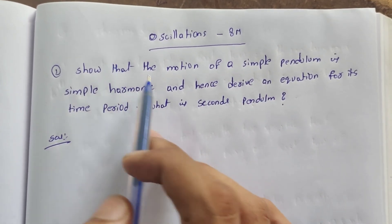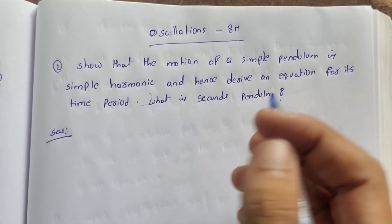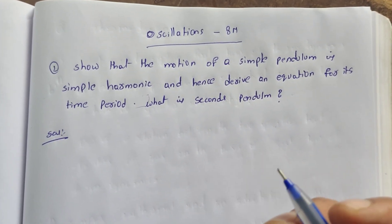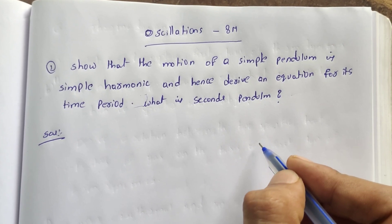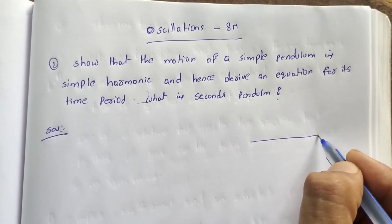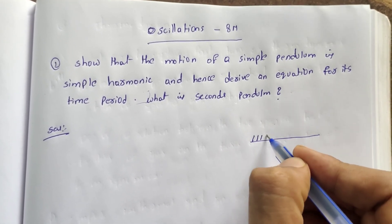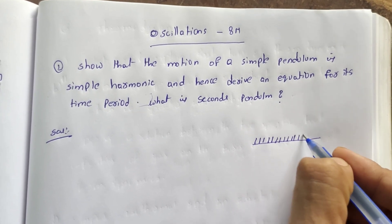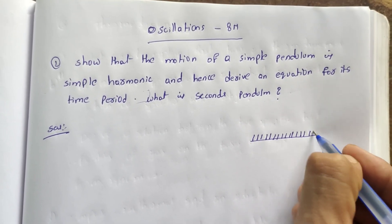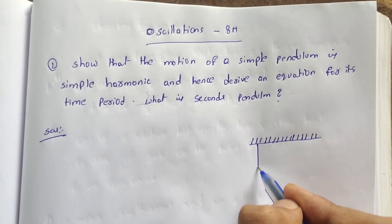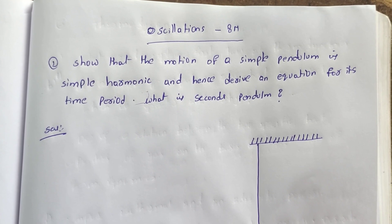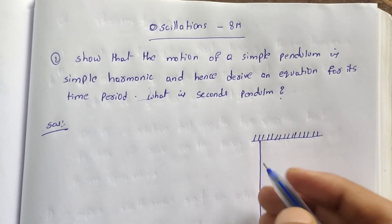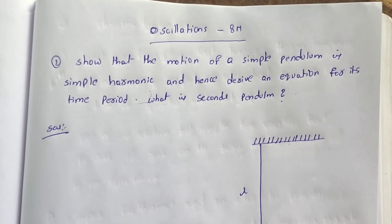The main question is: what is the time period? So first, let's make a simple pendulum. When you get a simple pendulum, you will find a very easy equation. So let's make a diagram of length L.